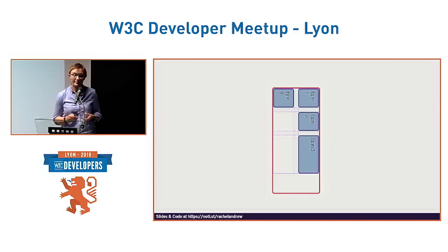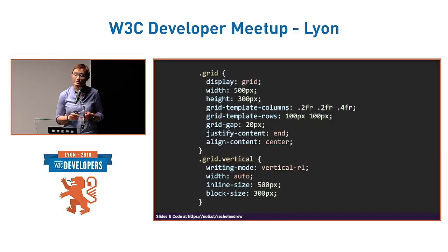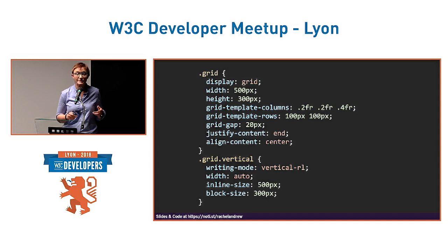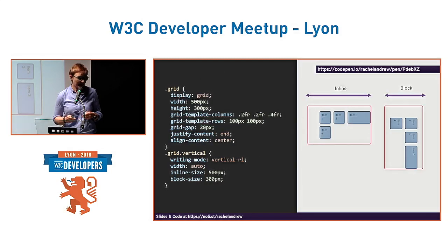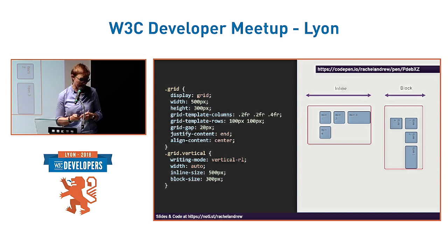We can see with the Grid Inspector that we've turned the grid on its side using vertical-rl — it's working in exactly the same way. Those alignment properties that started life in Flexbox and ended up in box alignment give us the ability to use them in Grid as well. If we've got spare space in the grid container in the inline direction, we can use justify-content to distribute it; if we've got space in the block dimension, we can use align-content to distribute it — distributing space before, after, or in between the grid tracks, just as we use align-content to distribute space between flex items.